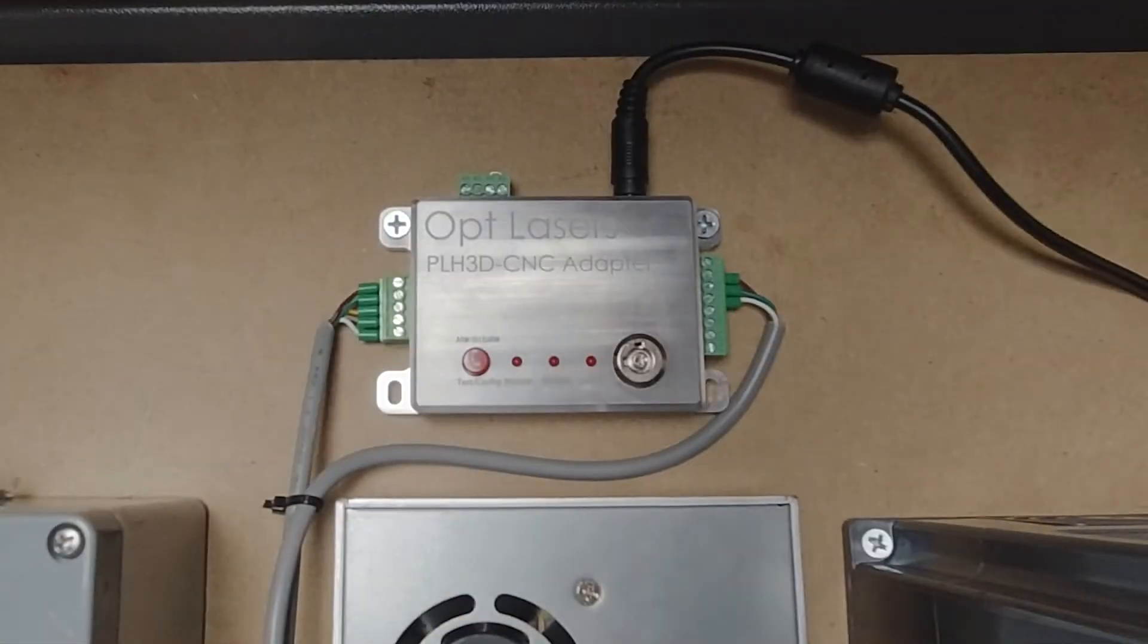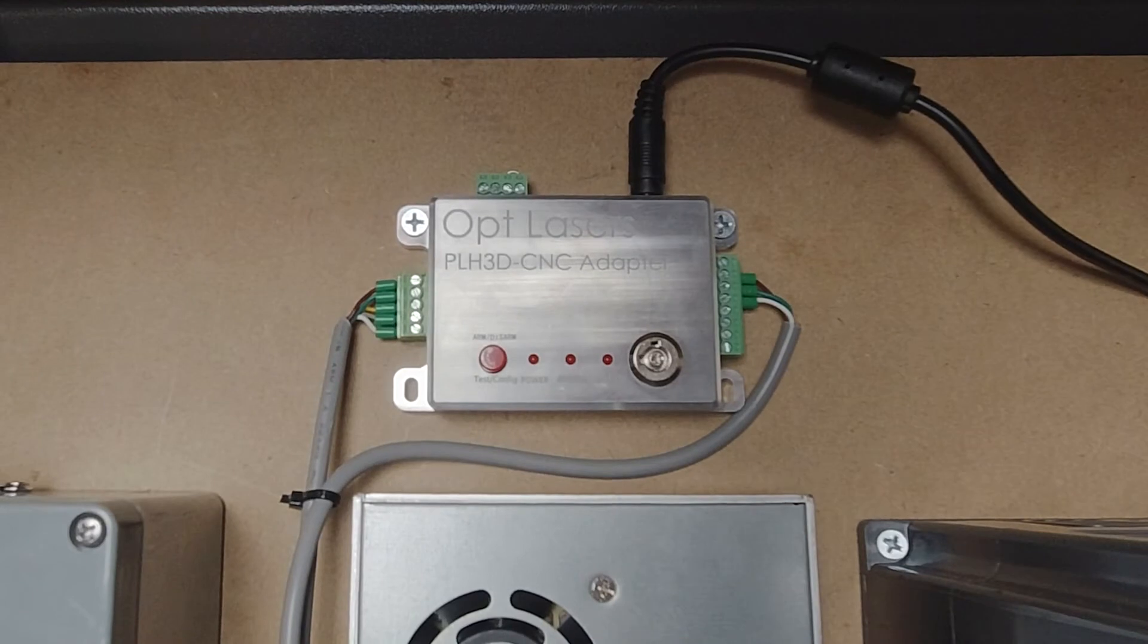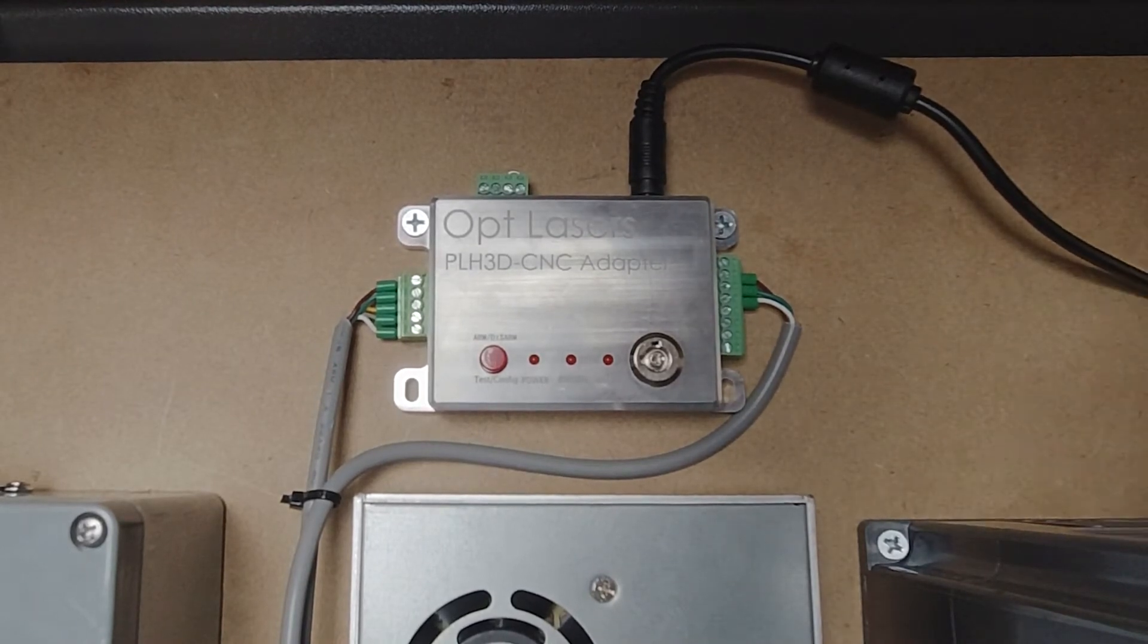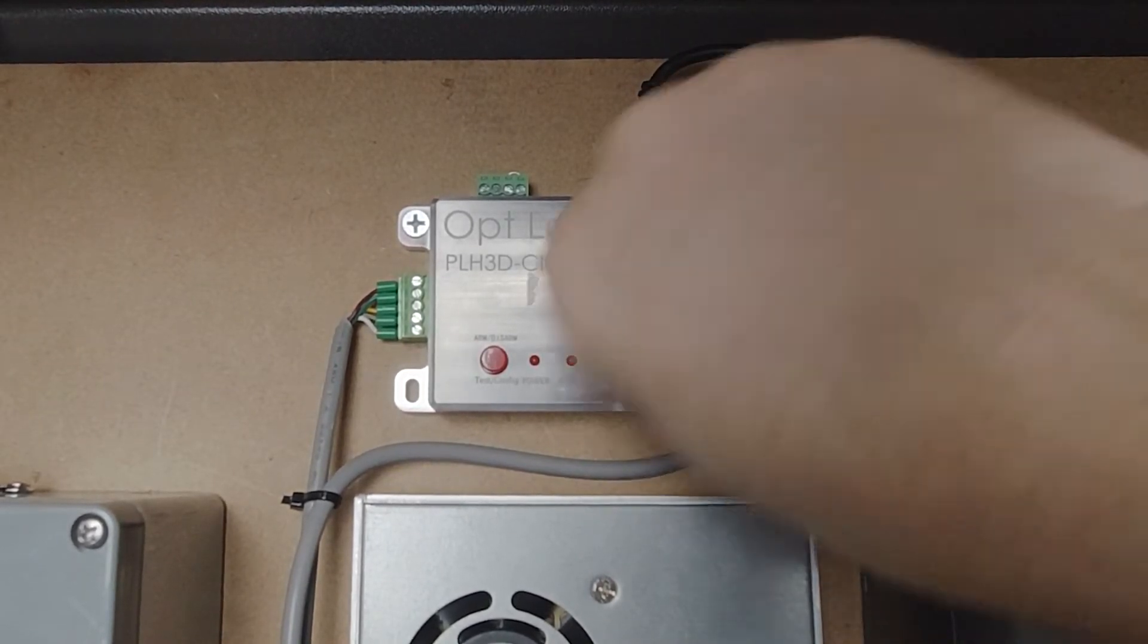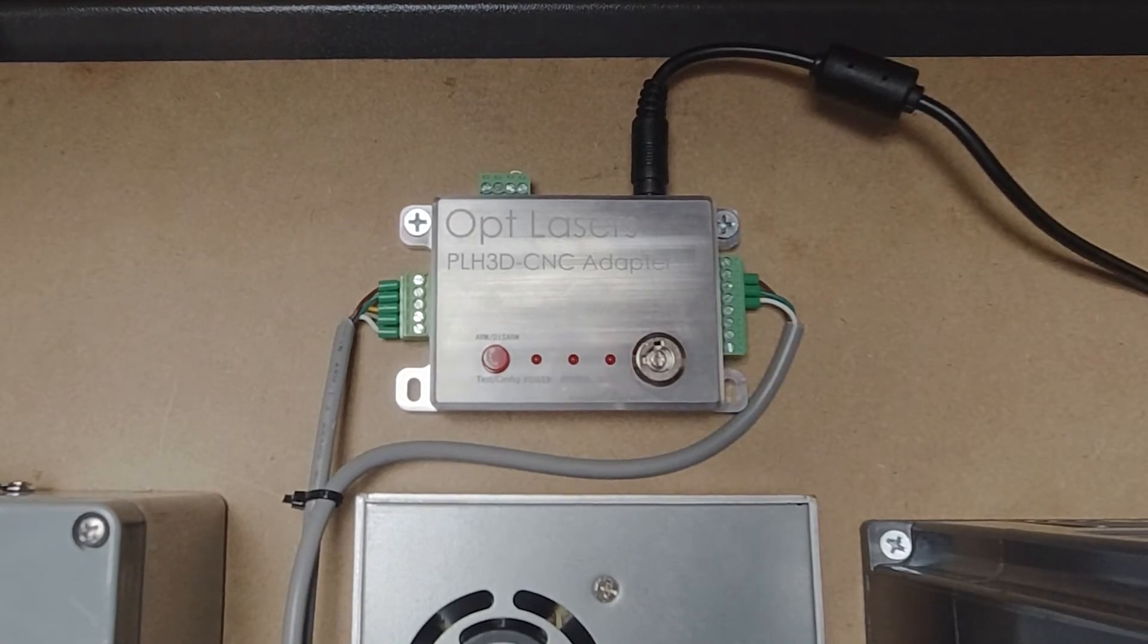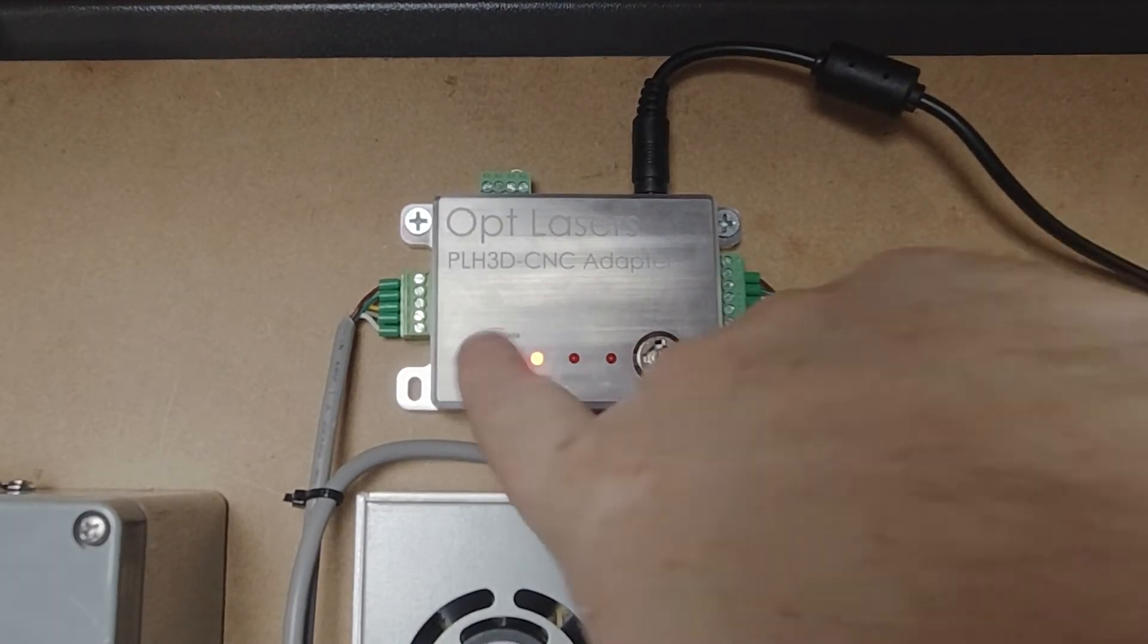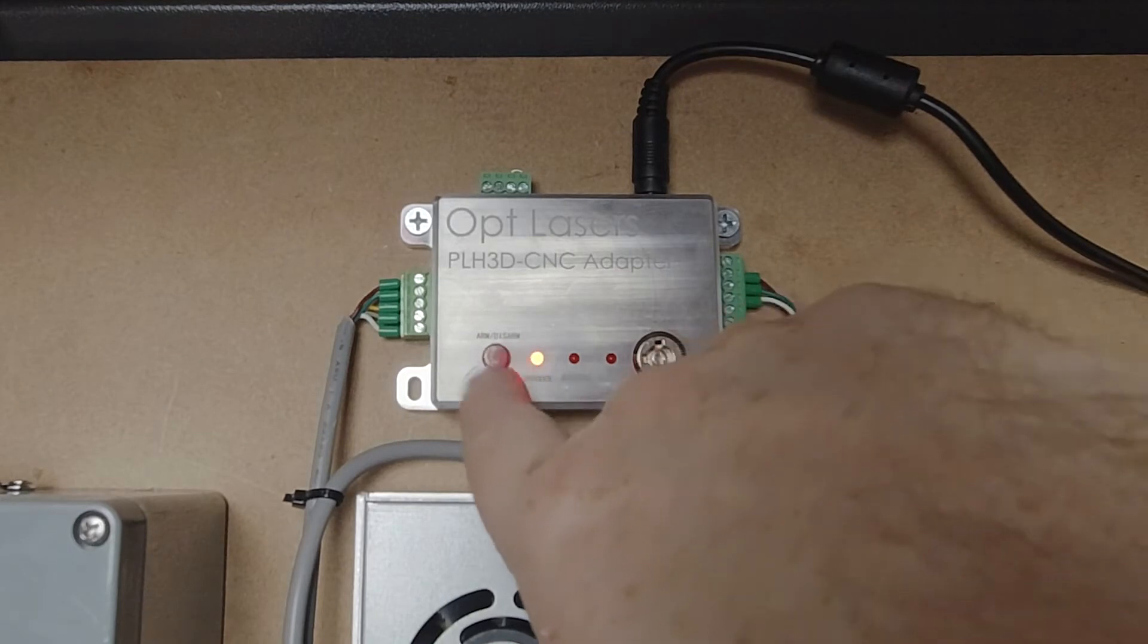Okay, now that we've got everything hooked up, we can test fire the laser. So you simply put your key in, switch it on, power light will come on. Press this once, it'll arm the fan and turn the laser on.